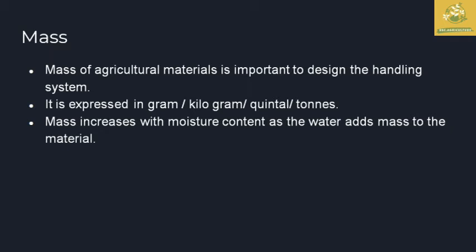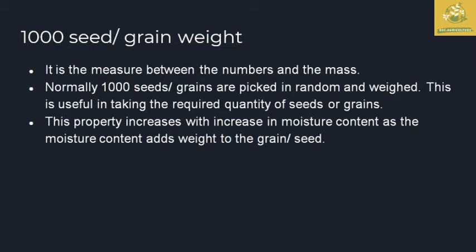Thousand seed per grain weight measures the number and mass of different grains. This is mainly done for grain and seed products — for example, rice and wheat. Seed weight is measured by randomly picking and weighing a required quantity of seeds or grains. This property increases with moisture content, meaning the weight of grain or seed increases when moisture content increases.